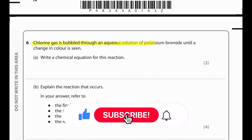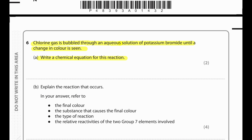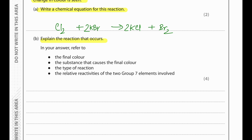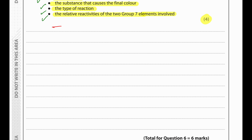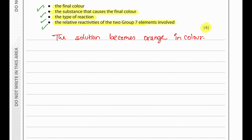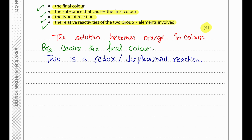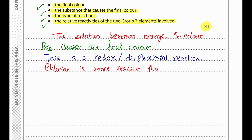Chlorine gas is bubbled through an aqueous solution of potassium bromide. The equation: 2KBr + Cl2 → 2KCl + Br2. The solution becomes orange due to bromine. The reaction is a displacement reaction — chlorine displaces bromide because chlorine is more reactive than bromine.